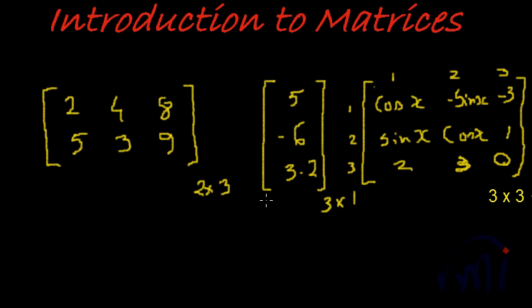Now let us learn about the general representation of any element of a matrix. How do I denote an element of a matrix? Let us consider the second element in the first matrix. This is in the first row and second column.